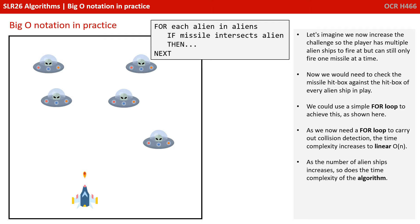As we now need a for loop to carry out collision detection, the time complexity has increased to linear. As the number of alien ships increases, so does the time complexity of the algorithm.